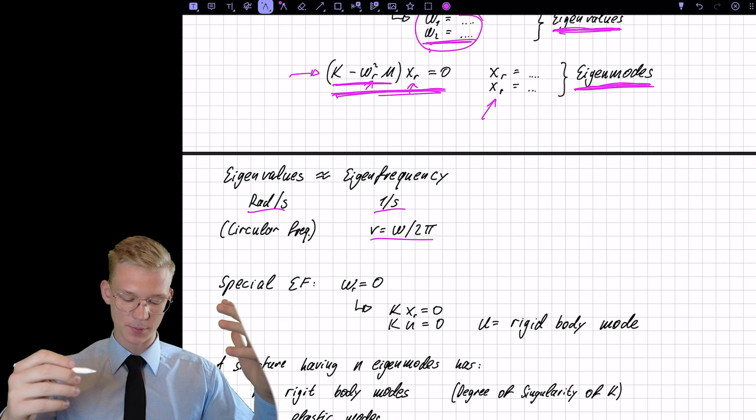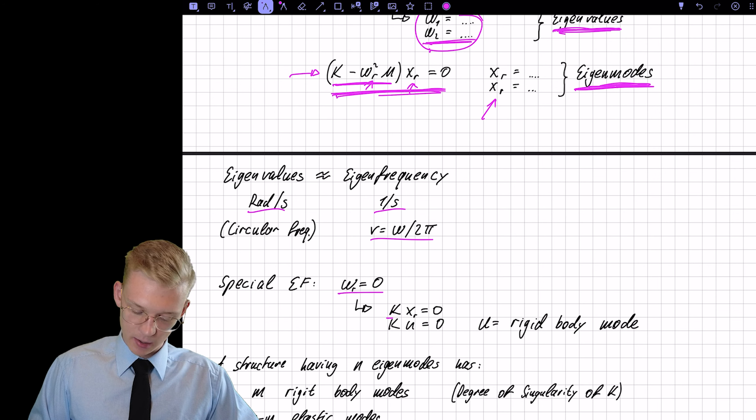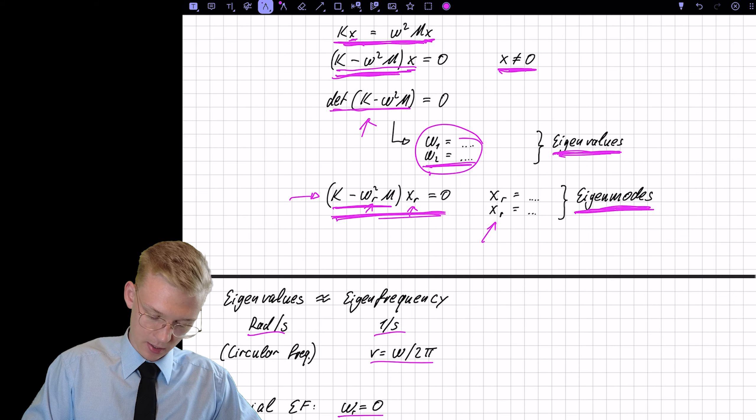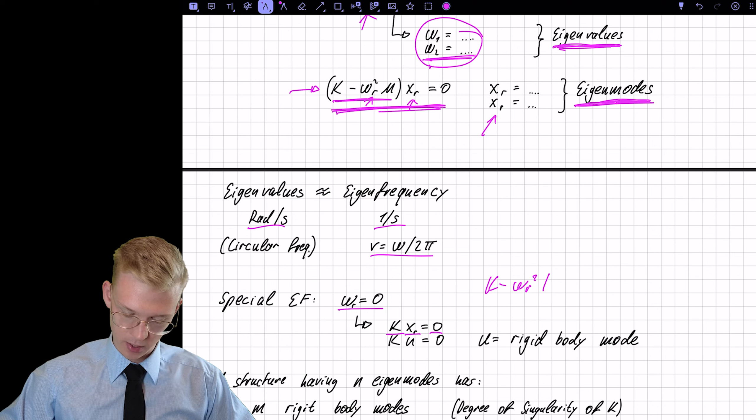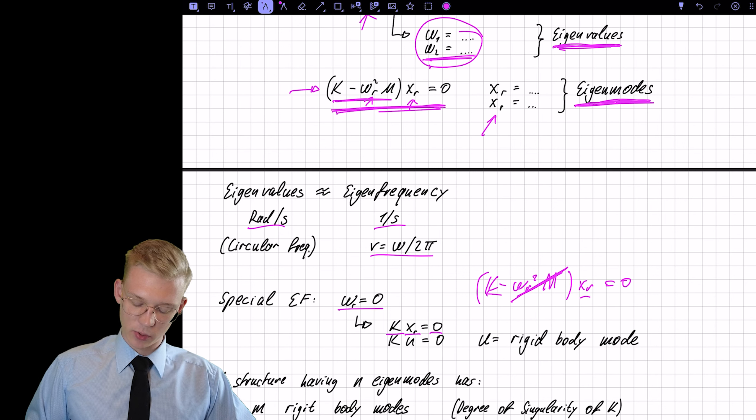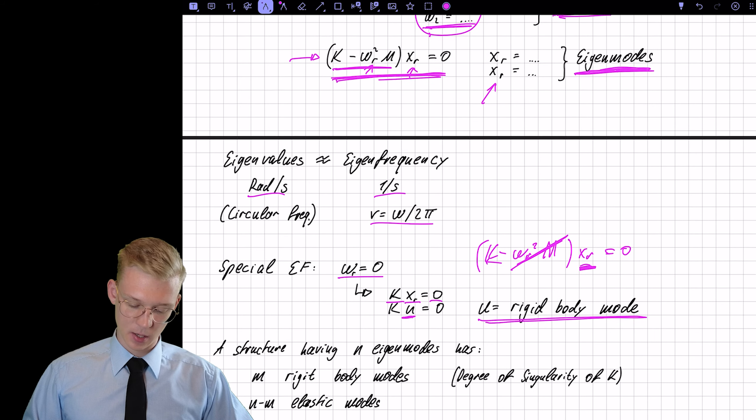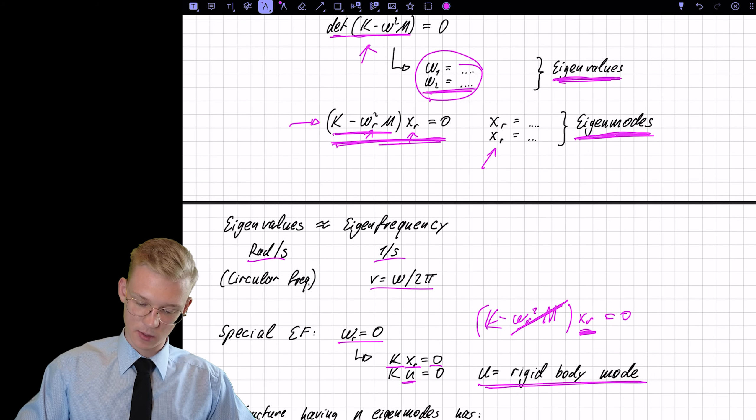So what if we have a special eigenfrequency? For example, that omega r is 0. That means that k times xr is 0 because this part, we have k minus omega r squared m xr is 0. If omega is 0, this is gone and we're only left with that part. So now we call this eigenmode u and u is our rigid body mode.